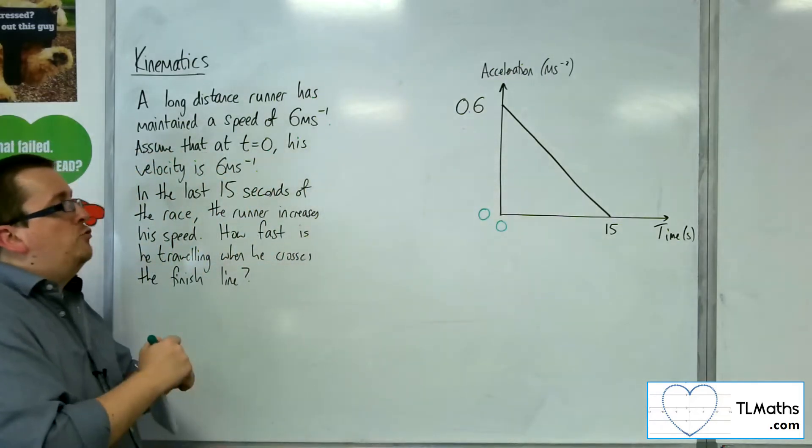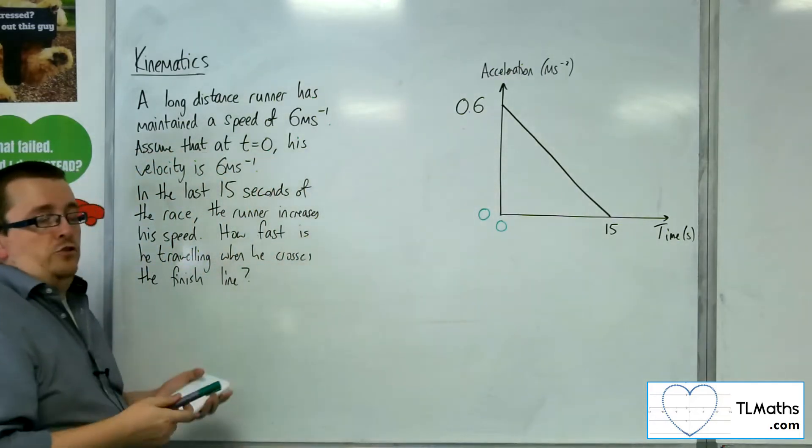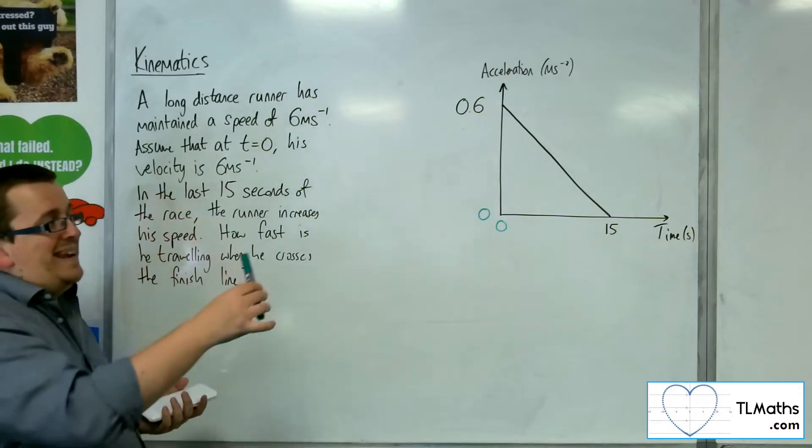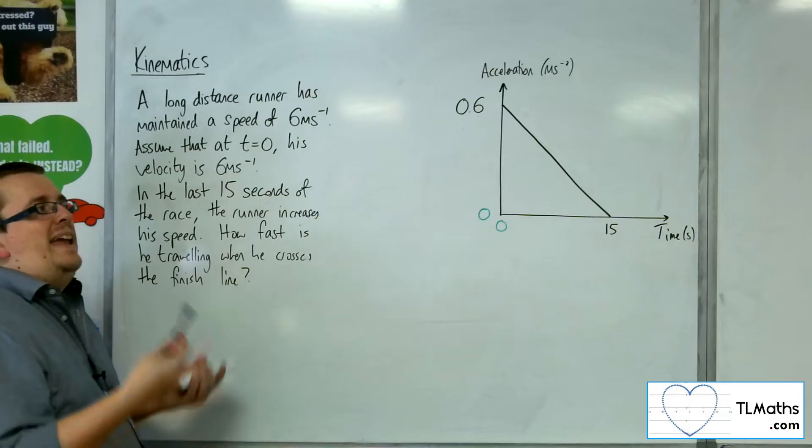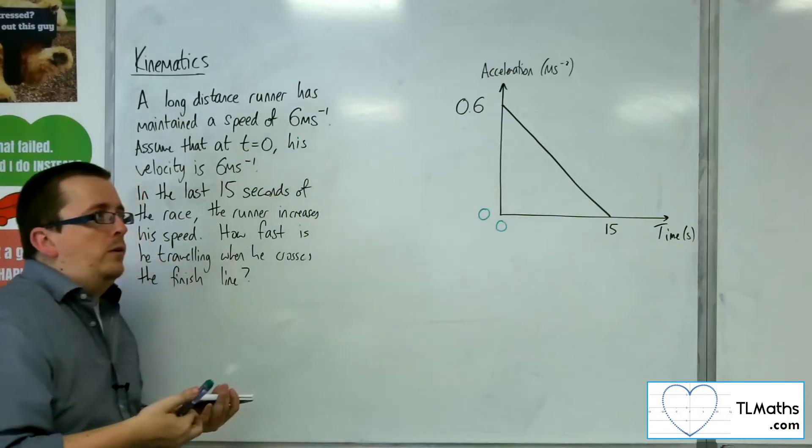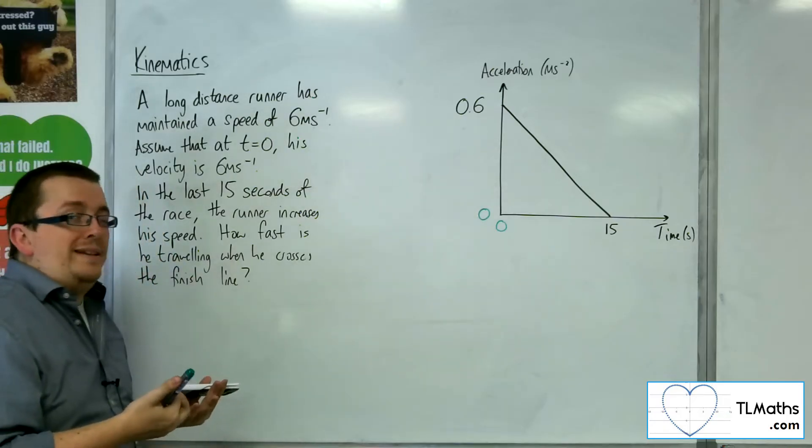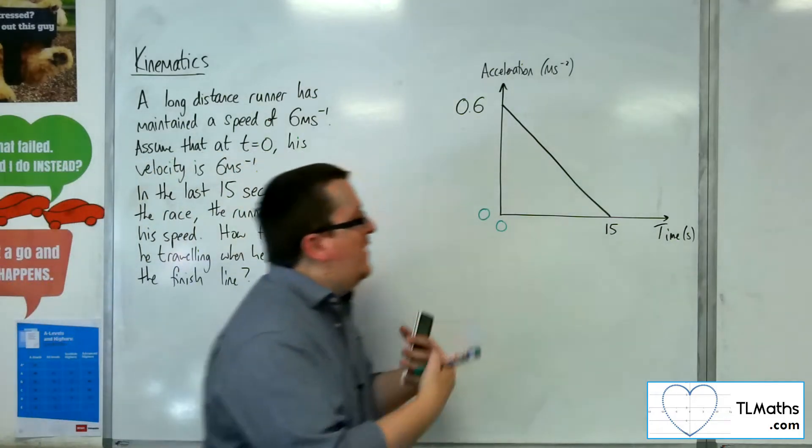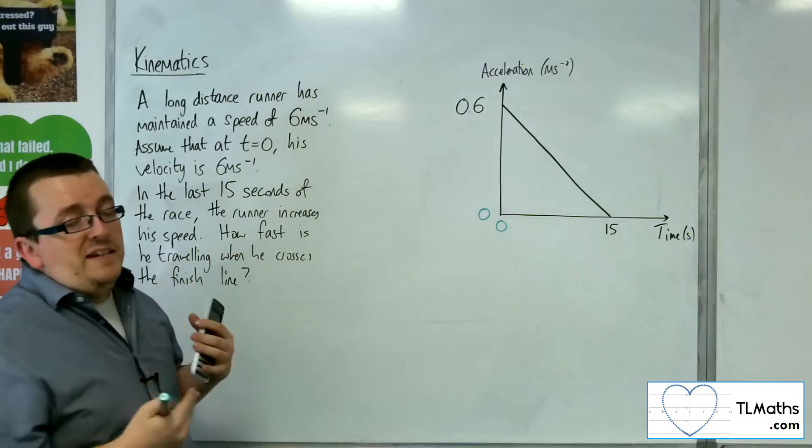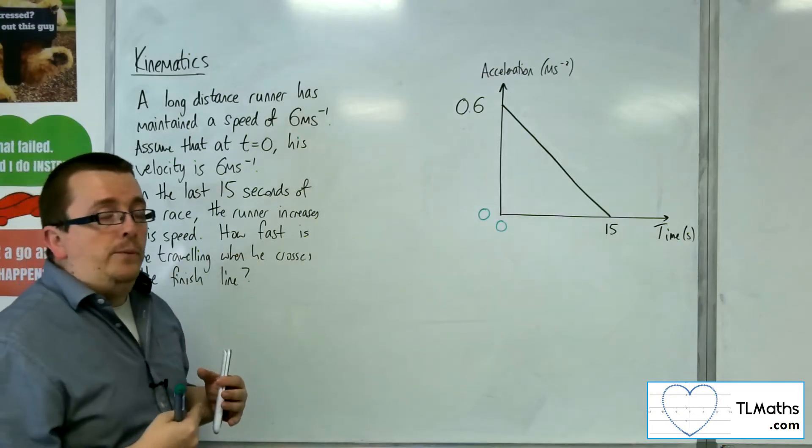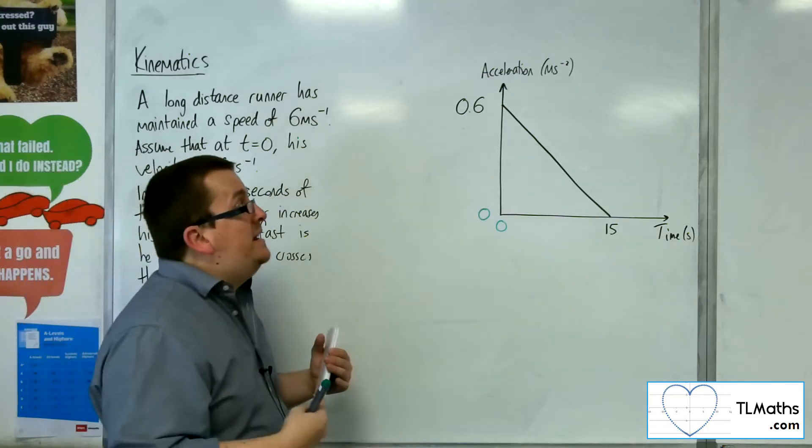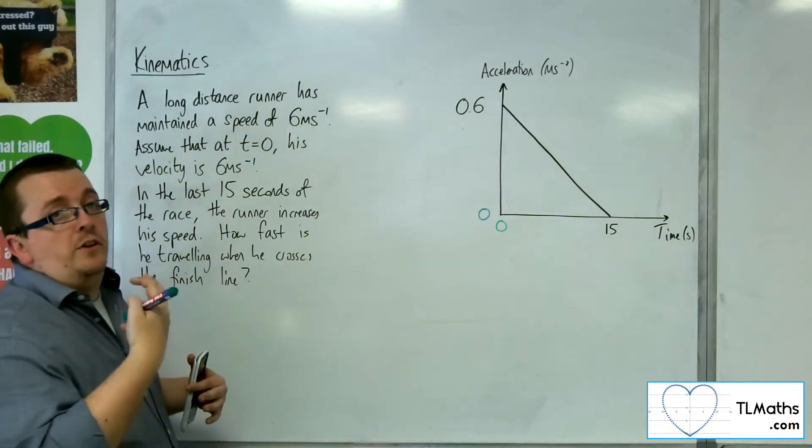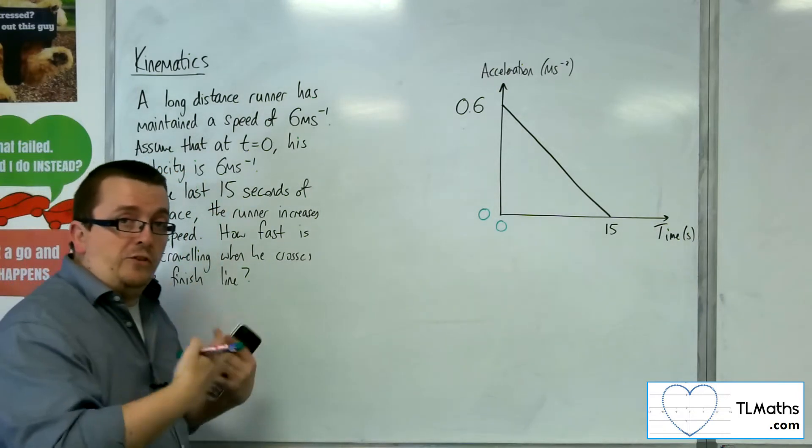Now, looking at this graph, it appears counterintuitive to what's going on. Because the acceleration has a negative gradient there, it then feels like, well, does that mean that he's slowing down? Well, no. So what it means is that at that instant, 15 seconds before the race ends, the runner immediately jumps to travelling at 0.6 metres per second per second, so increasing his speed.